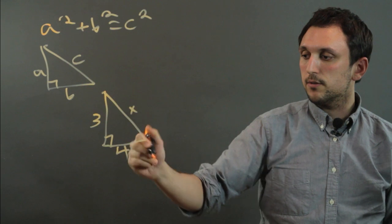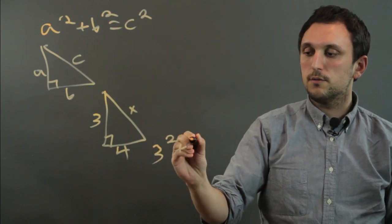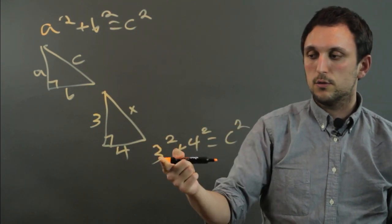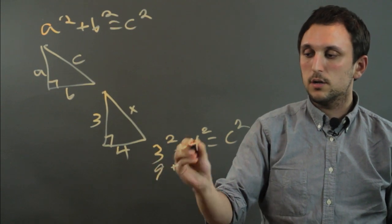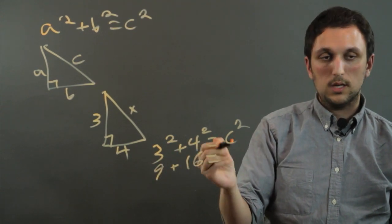in which case you would solve it by saying 3 squared plus 4 squared equals C squared. So 3 squared is 9 plus 4 squared, which is 16, equals 25.